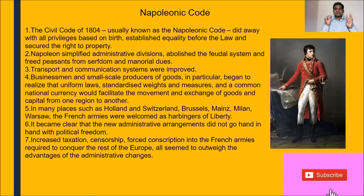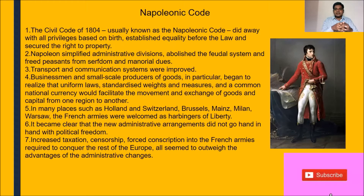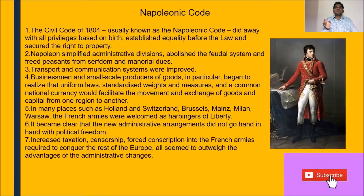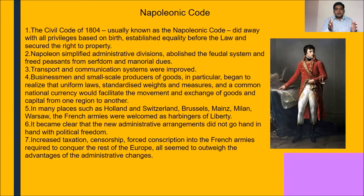Three important points to remember: first, do away with the privileges based on birth; second, he established equality before law — earlier there was no equality, so he brought equality before the law, where anybody doing any kind of mistake will be judged and punished on the basis of the same law, with the same punishment awarded for the same kind of crime. No special privileges for anybody born in a higher privileged segment of society. Third, he made right to property an official right.